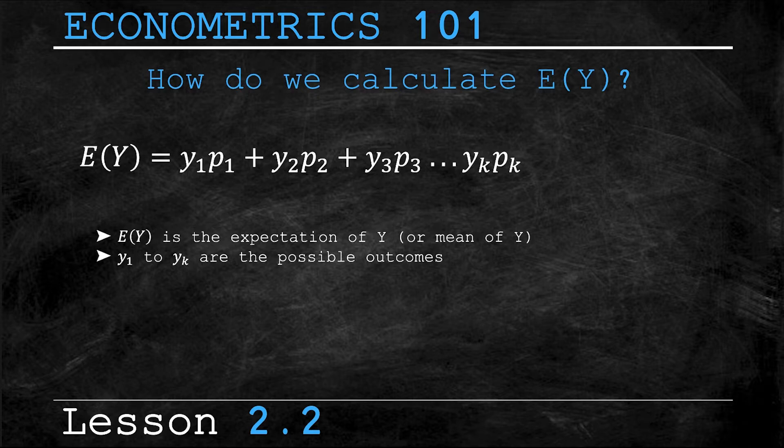y₁ is the first possible outcome, y₂ is the second possible outcome, y₃ is the third possible outcome, and so on and so forth until you get to the final outcome, which is outcome k.